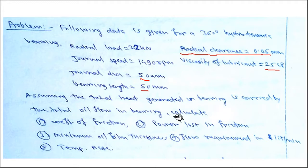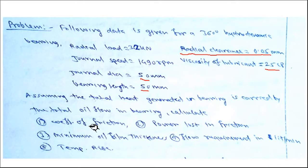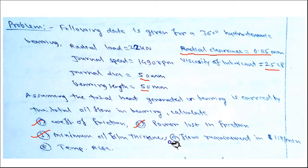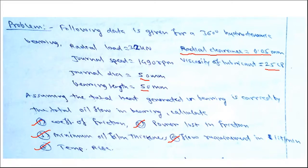Assuming that all heat generated in the bearing is carried by the total oil flow, we are asked to calculate: the coefficient of friction, power lost in friction, minimum oil film thickness, flow requirement in liters per minute, and the temperature rise in the bearing.